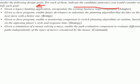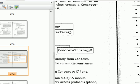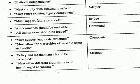Second example: given a chess program, enable future developers to substitute the planning algorithm that decides the next move. This is about future developers making substitutions in the future, so we're talking about bridge. Bridge deals with future protocols, future development, and future algorithms.